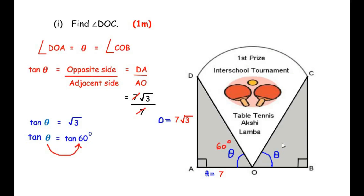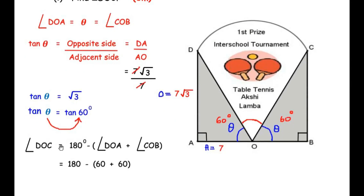Now that theta is 60°, we mark both angle DOA and angle COB as 60°. Since AOB is a straight line making a total angle of 180°, angle DOC = 180° − (angle DOA + angle COB) = 180° − (60° + 60°) = 180° − 120° = 60 degrees.